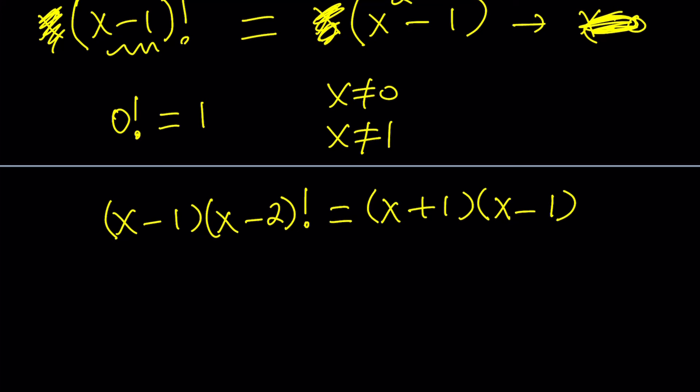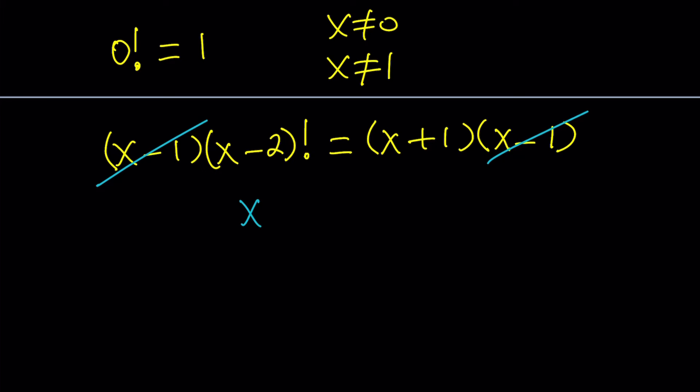x squared minus 1 can be factored as x plus 1 times x minus 1. And now, as you can see, x does not equal 1, so we're allowed to cancel out x minus 1 by division. And we get a simpler equation. This equation, you'll probably recognize we've done a factorial problem recently. I'll share the link down below.